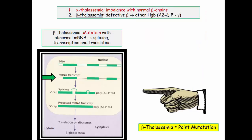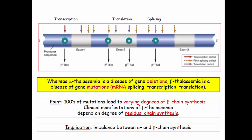The other take-home on the thalassemias is the genetic basis for the disease. Beta thalassemia is characterized by point mutations — there are literally hundreds of different mutations — but what they share in common is abnormal messenger RNA that leads to splicing, transcription, and translation issues. This slide underscores the multiple mutations associated with beta thalassemia. There is no one characteristic mutation, so they ask about the common denominator being abnormal messenger RNA splicing and the downstream consequences.